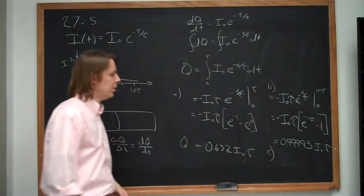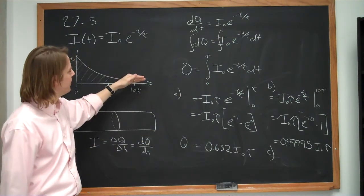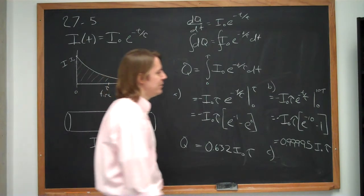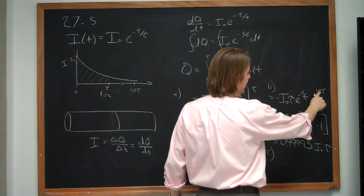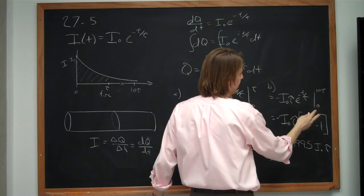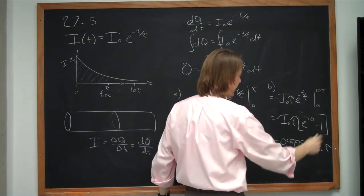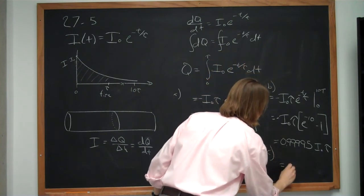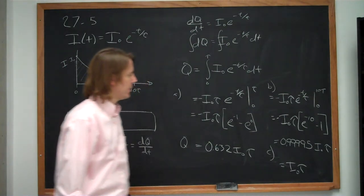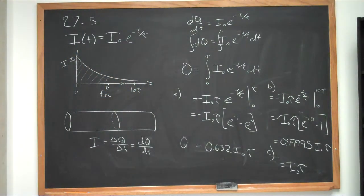Part C asks what if we go all the way to infinity — looking at all the charge that flows in this exponential decay. That just means putting infinity as the upper limit. E to the minus infinity is 1 over e to the infinity, which is essentially zero. So integrating to infinity, the bracket becomes exactly 1, and the answer is simply I₀τ.